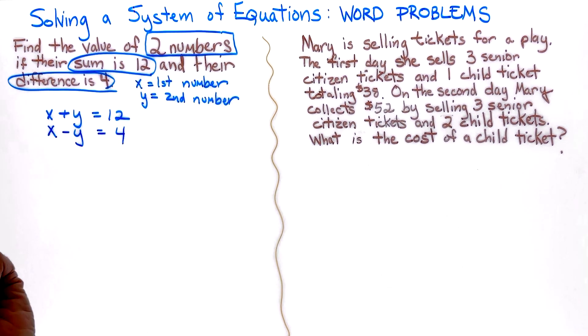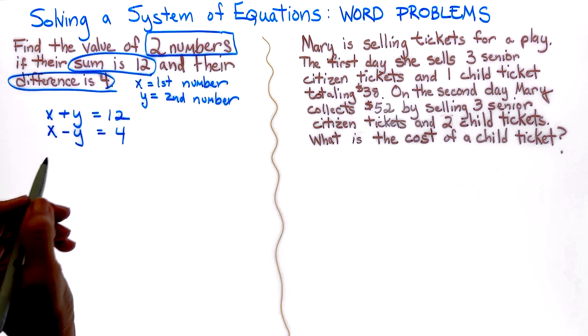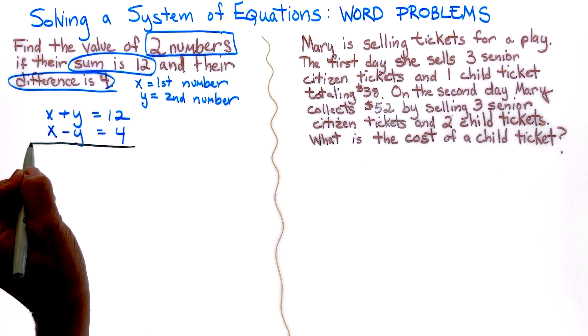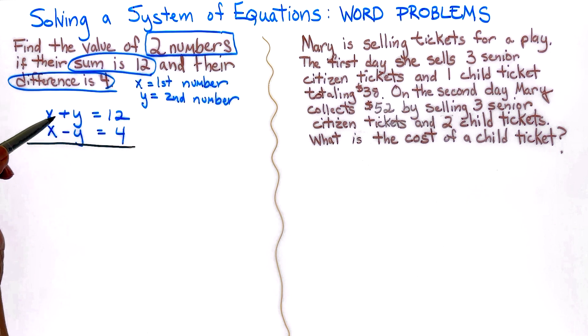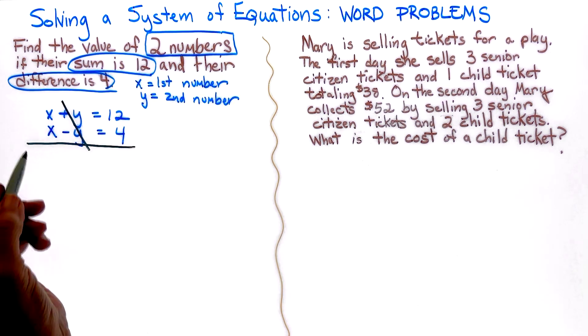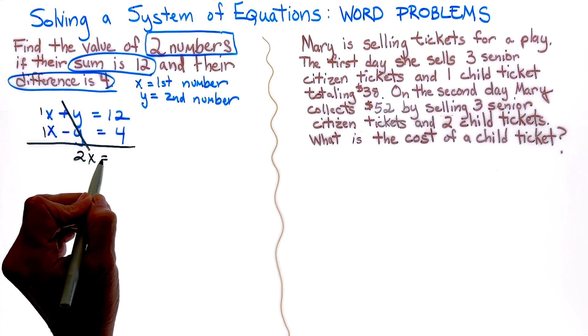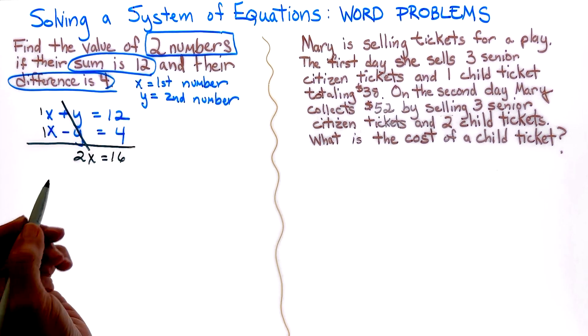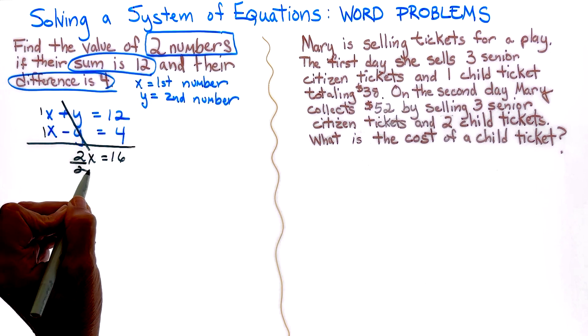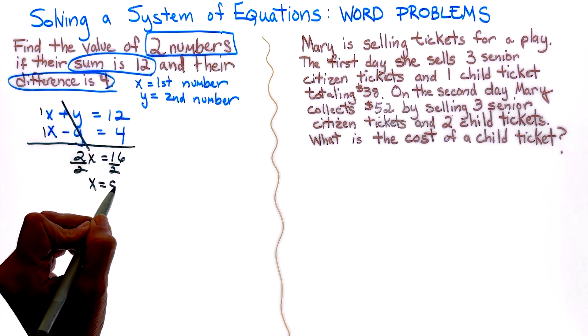When I look at this now, I can solve by elimination, or I can solve by substitution. But I'm looking at the problem, and I do see a pair of opposites. So I'm going to solve by elimination by getting rid of my y's, because they're a pair of opposites. So we have a 1x here and a 1x here, so it's 2x is equal to 16. We're dividing both sides by 2, so x is equal to 8.